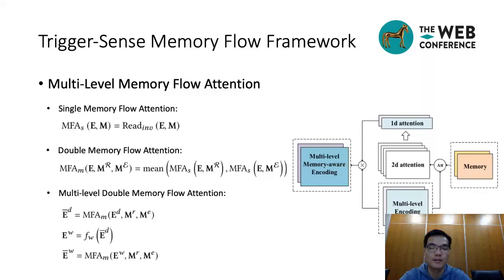Memory flow attention mechanism is to enhance task relevant information in the input sequence, such as entity surface names and trigger words. Given a memory M and a sequence encoding E, we calculate the memory-aware sequence encoding by running memory inverse-read process. We design a multi-memory flow attention mechanism, that is, a mean pooling of two single memory flow attentions on entity memory and relation memory. We know that languages are hierarchical. We extend the multi-memory flow attention mechanism to multi-level, sub-word level and word level, and design a multi-level multi-memory flow attention mechanism.